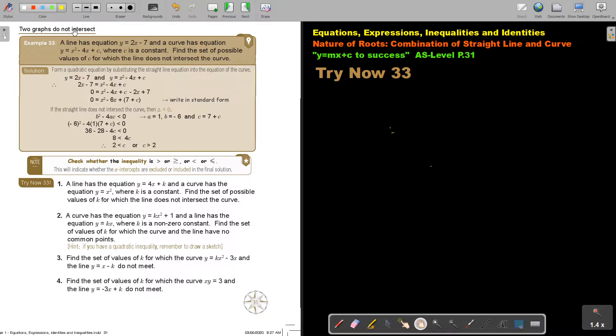Two graphs do not intersect. In the previous video, it was first just a tangent and then it was cutting in two distinct points, and now it's do not intersect. A line has an equation and the curve has the equation, which C is a constant. Find the set of values of C for which the line does not intersect the curve. First you are going to form a quadratic equation by substituting the straight line equation into the equation of the curve.